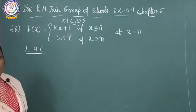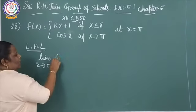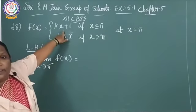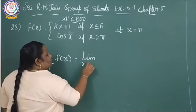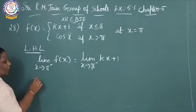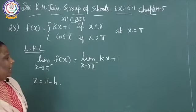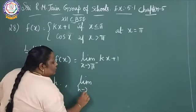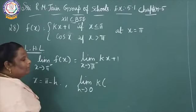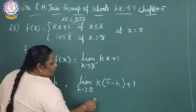We take the left hand limit: limit x tends to pi minus of f of x. Since x is less than pi, we choose the value kx plus 1. We replace x equal to a minus h, where a is pi, so x equals pi minus h. Taking limit h tends to 0, we get k into (pi minus h) plus 1. Applying h equal to 0, the value is k pi plus 1.